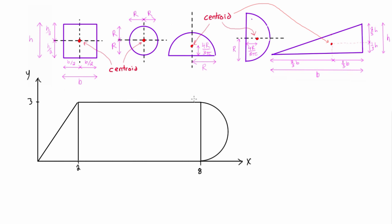For this whole shape here, we're looking for where the centroid of the entire shape is. The way we do it is we break it into simple shapes whose centroids we already know, and then we add them up using the discrete method: the sum of x_i times the area of each individual shape, divided by the total area.